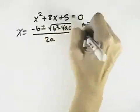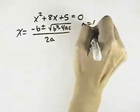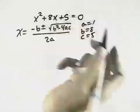where a is 1, b is 8, and c is 5, looking at the coefficients in front of each of my terms.